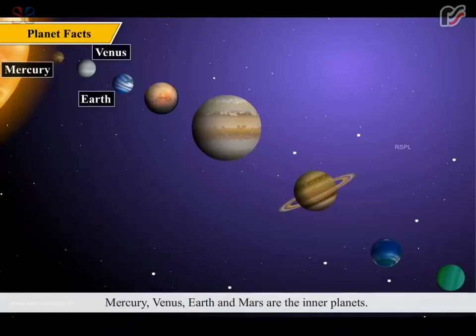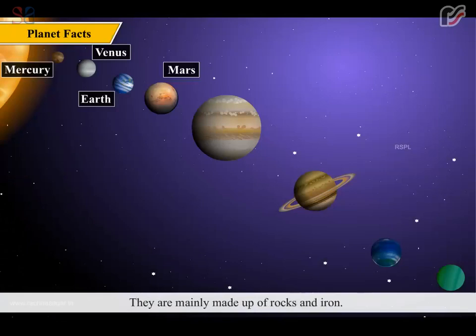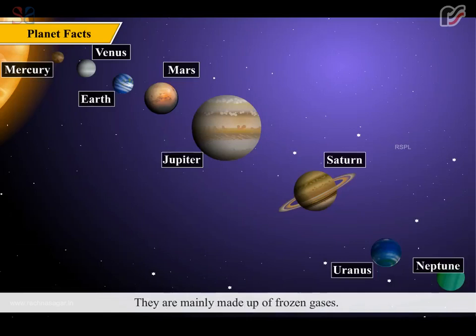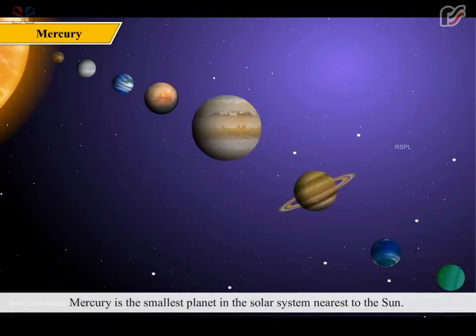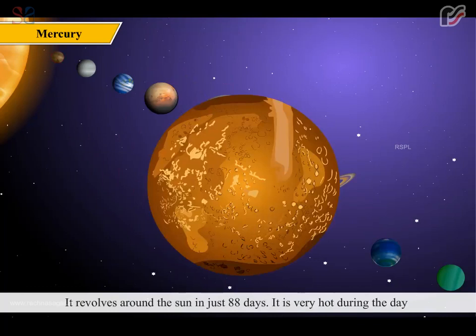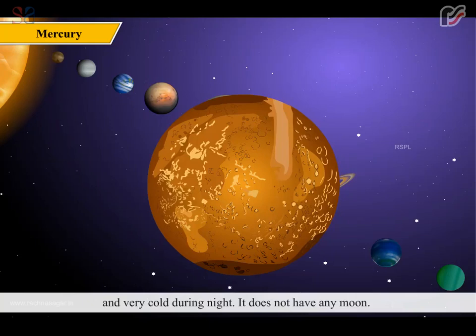Mercury, Venus, Earth and Mars are the inner planets. They are mainly made up of rocks and iron. Jupiter, Saturn, Uranus and Neptune are the outer planets. They are mainly made up of frozen gases. Mercury is the smallest planet in the solar system, nearest to the Sun. It revolves around the Sun in just 88 days. It is very hot during the day and very cold during night. It does not have any moon.